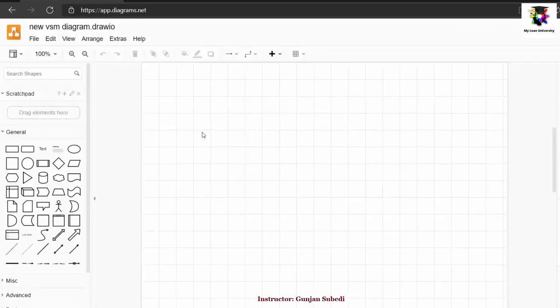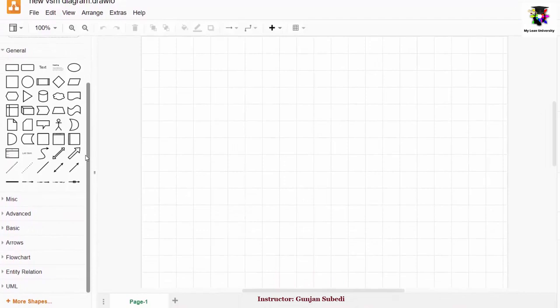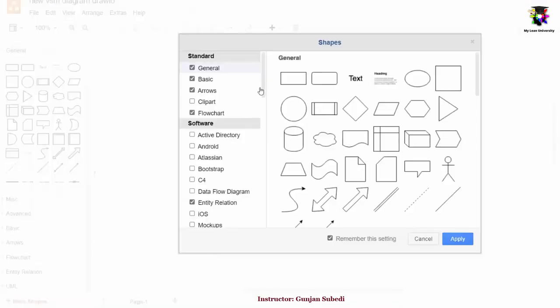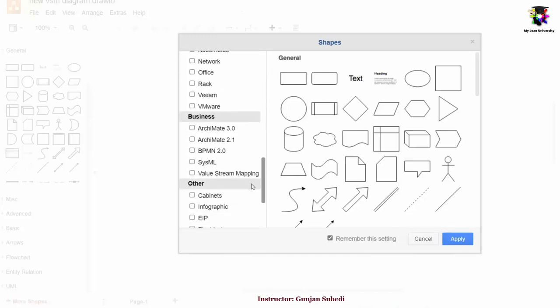At the left hand side, you can see various symbols that can be used to draw the maps. But nowhere here we find the symbols for drawing the value stream map. For that, you have to go down, click on more shapes and we have to drag the cursor down to business.